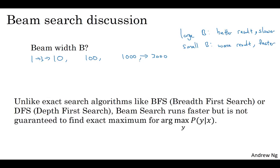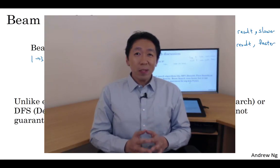Beam search runs much faster but does not guarantee to find the exact maximum for this argmax that you'd like to find. If you haven't heard of breadth-first search or depth-first search, don't worry about it. It's not important for our purposes. But if you have, this is how beam search relates to those algorithms.